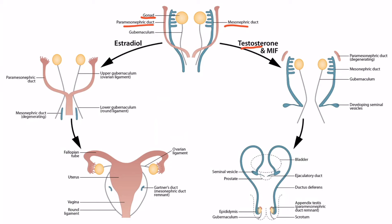In the presence of testosterone, which is produced from Leydig cells, the mesonephric duct will continue to develop. Also, the Sertoli cells will produce Müllerian Inhibitory Factor, or MIF, and this suppresses the development of the paramesonephric duct, so it will degenerate. At the same time, the testes begin to descend from the abdomen. Notice that the gubernaculum is located on the inferior pole of the testes — it is a fibrous band that pulls the testes down into the scrotal sac as it shortens in length. The gubernaculum helps anchor the testes within the scrotum.